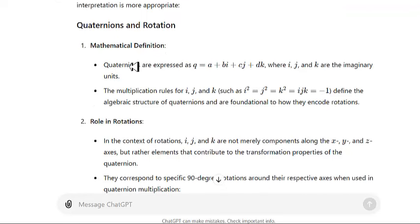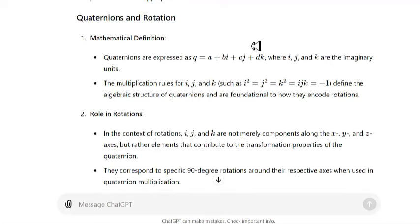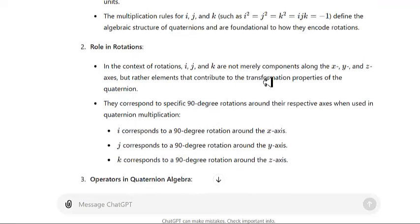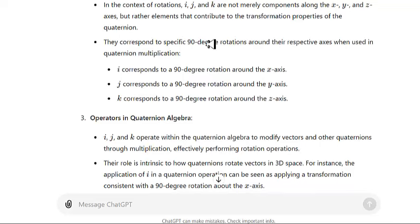ChatGPT explains: quaternions are expressed as q = a + bi + cj + dk, where i, j, and k are the imaginary units — unit rotations, in my opinion. The multiplication rules i² = j² = k² = ijk = -1 define the algebraic structure of quaternions and are foundational to how they encode rotations. In the context of rotations, i, j, and k are not merely components along the x, y, and z axes, but rather elements that contribute to the transformation properties of the quaternion. They correspond to specific 90-degree rotations around their respective axes when used in quaternion multiplication.